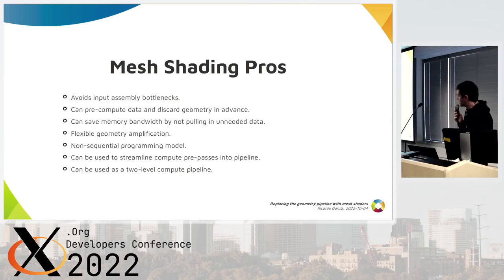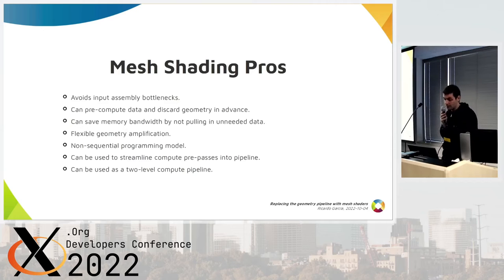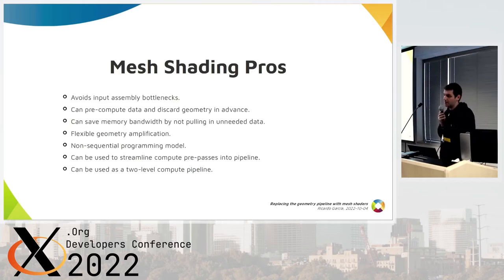Advantages of mesh shaders: you can avoid input assembly bottlenecks if they exist, and you can pre-compute data and discard geometry in advance, saving processing power and memory bandwidth. Geometry and tessellation can be applied in more flexible ways since you're in a compute-like shader. The compute model allows shaders to take advantage of GPU processing power more effectively in theory. Many games use a compute prepass to process data for draw time, and with mesh shaders it may be possible to streamline this into the mesh or task shader. You can also use mesh shading pipelines as two-level compute pipelines if needed.